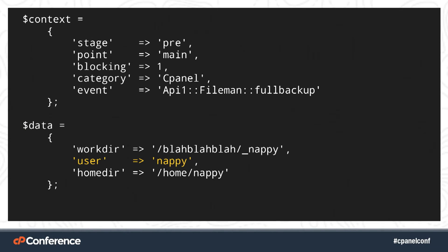This is what those data structures look like. Context includes the category, event, stage, and other metadata. In this case we have no use for that data since we already know all of it, but if you wanted, you could use this to write your own dispatch method. The data structure includes everything that was passed into the API call.